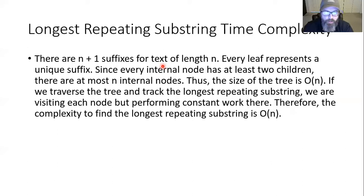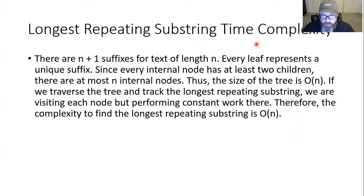What's the time complexity? There are N+1 suffixes, because there's a suffix that begins at every character up to length N, plus the appended dollar sign. Every leaf represents a unique suffix, and since every internal node has at least two children, there are at most N internal nodes. The size of the tree is O(N). If we traverse the tree tracking the longest repeating substring, we visit each node but perform constant work — we just check how long that string is. So the complexity is O(N).